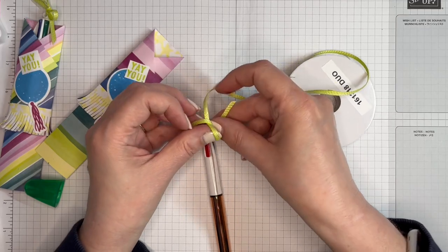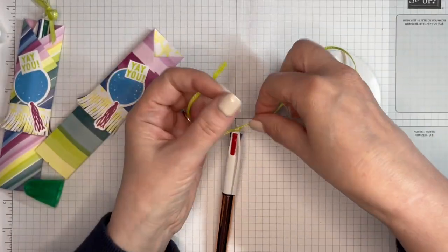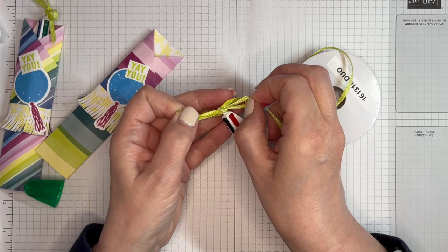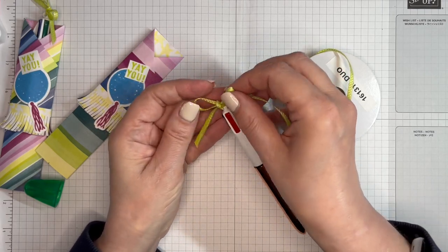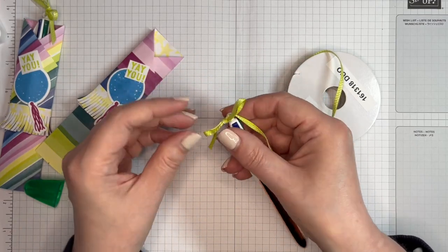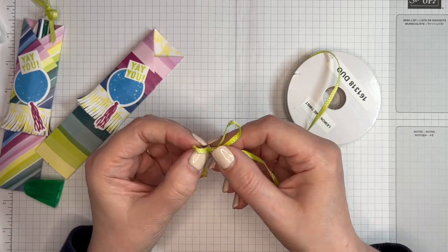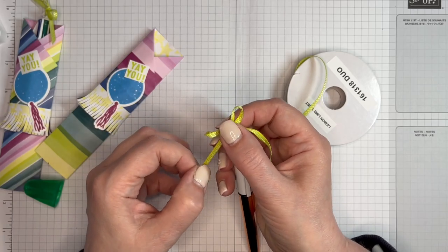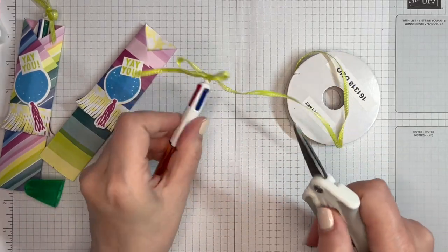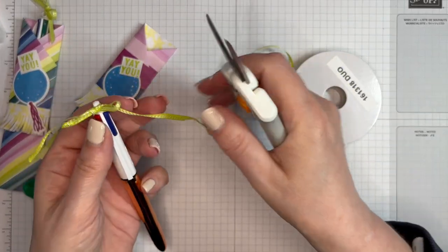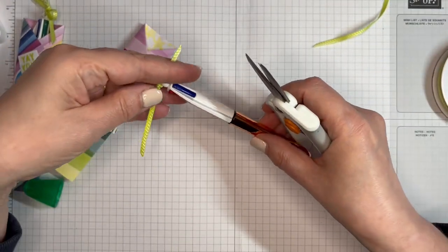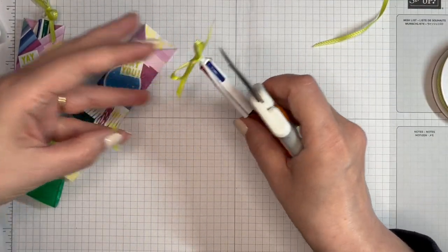This isn't necessary, it's just to finish it off. That will do I think. I could play about with it for ages but it will do. Little bow. Ribbon scissors, just chop that end off about there, and that one about there. There we go.